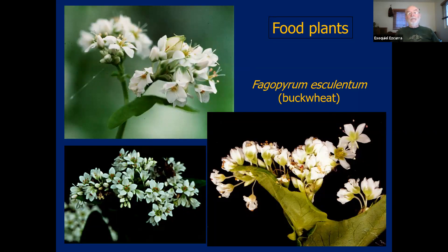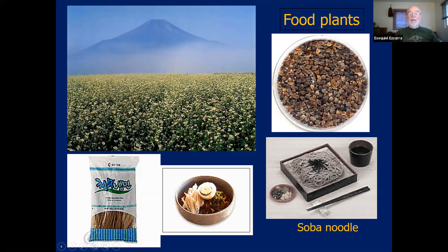A very important plant is buckwheat, Fagopyrum esculentum — a plant from Asia used in pretty much the same way that cereals are used. The seeds are three-sided, quite large, three-sided achenes that are very hard and can be ground to make flour. The flour is used to make all sorts of things in Asia and the Middle East, and is a basic ingredient of soba noodles.